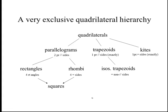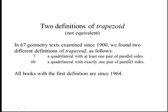We can also talk about kites, which have exactly one pair of congruent sides. This is not a very standard definition, but that's one way we could do it.